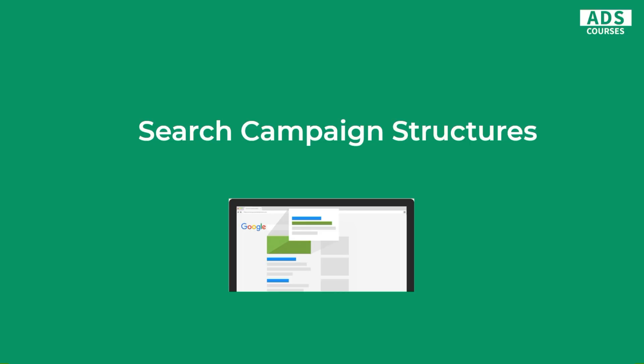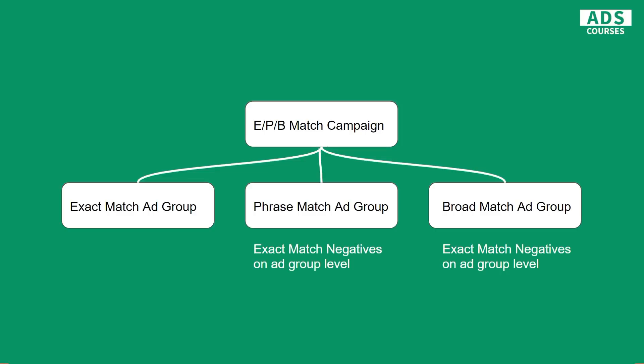Let's start with search campaign structures. This is the first example — it's not my favorite, but it can work just fine, especially when you have a lot of campaigns on your account. This example shows only one campaign, but you should have more than one. In this strategy, you have all keyword match types inside one campaign and you simply split match types into different ad groups: an exact match ad group, a phrase match ad group, and a broad match ad group with related keywords. In the phrase and broad match ad groups, you would place exact match negatives at the ad group level.